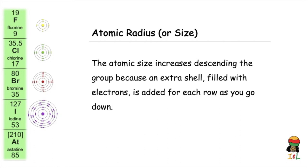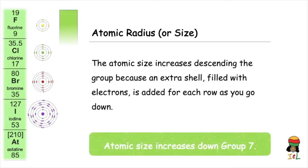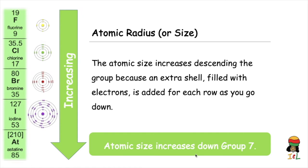Since each progressive atom descending the group has one more shell than the previous atom, the atomic radius increases — we can see this quite obviously in our diagrams. Therefore, the atomic size increases descending Group 7. In fact, the atomic radius or size increases down all the groups in the Periodic Table.